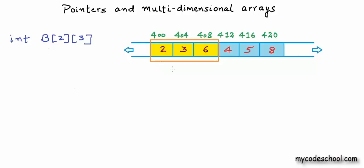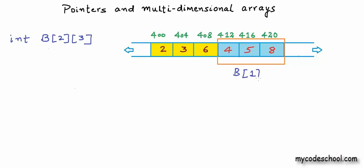This first block of 12 bytes containing integers 2, 3, and 6 shown in yellow is my first one-dimensional array b[0], and the next block of 12 bytes is my second one-dimensional array of three integers, b[1]. So we have two one-dimensional arrays in our collection — two collections of three integers each — and everything is organized in one contiguous block of memory.